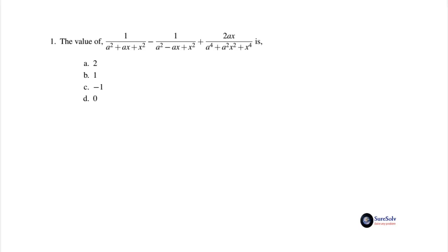The first problem is the value of 1/(a² + ax + x²) - 1/(a² - ax + x²) + 2ax/(a⁴ + a²x² + x⁴) is: option a) 2, option b) 1, option c) -1, and option d) 0.